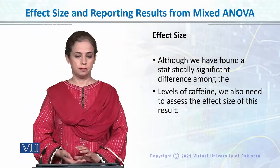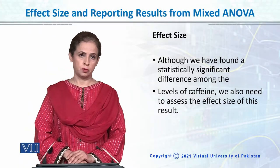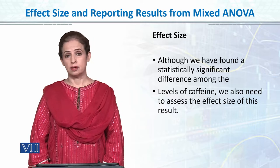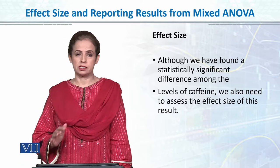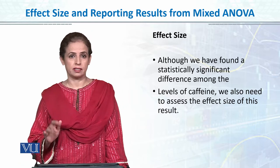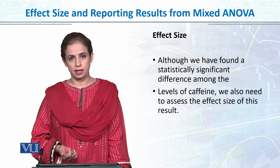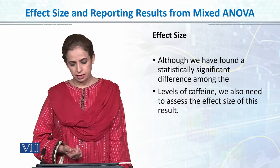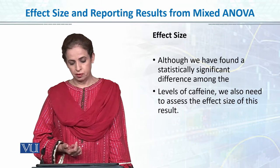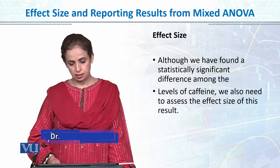The next part is effect size and then reporting the results of the mixed ANOVA. Effect size — we have talked a lot about how to calculate the variance with the tables, whether it is within or between group. So we simply will be reporting the effect size as the partial eta square.